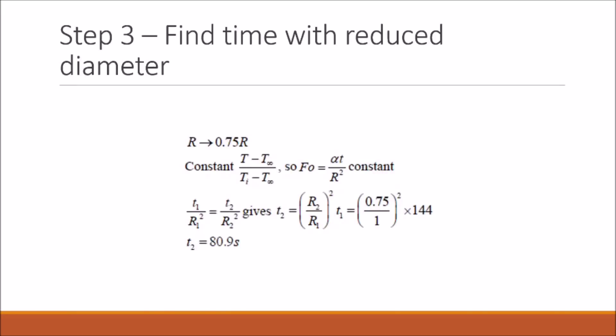The third question asks us to find the time, but now with a reduced diameter. We're changing our diameter by decreasing it by 25%, and we're going to use our relationship that the time is proportional to r squared, or the size of our tube. Using this relationship, we find that the time for this reduced size is 80.9 seconds, which is less than what we calculated previously.